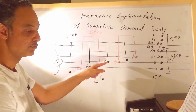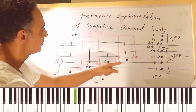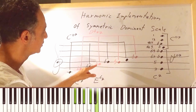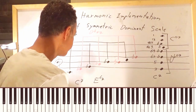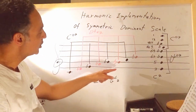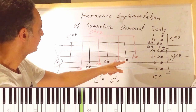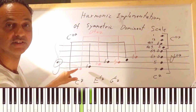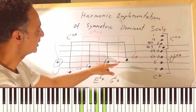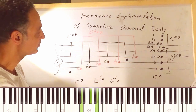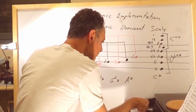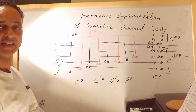If we go another minor third up to G flat, we have G flat, B flat, D flat, and F flat — the G flat seven chord. And going up another minor third we arrive at A, with C sharp, G, and B — the A7 chord.